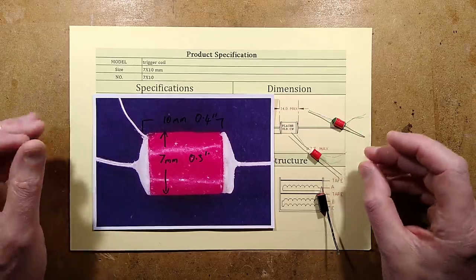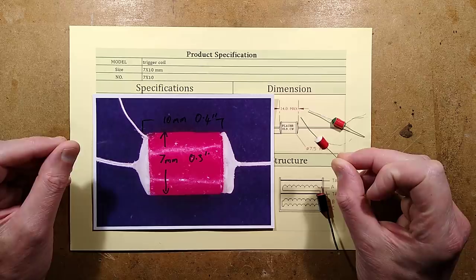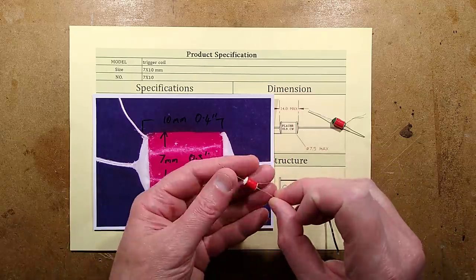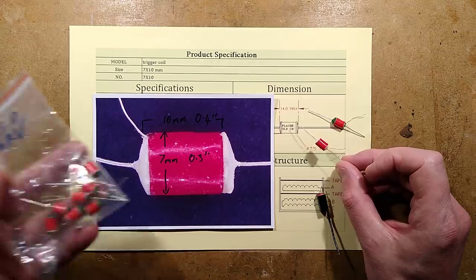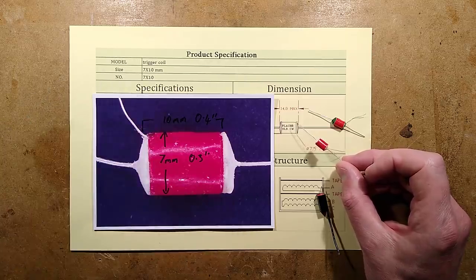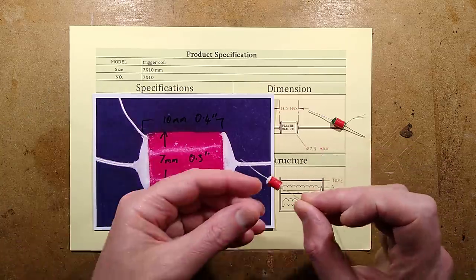Let's take a look at a high voltage trigger transformer for a xenon strobe tube. The reason I got these transformers, I got a couple of packs of them, is because I wanted to experiment with using them for other high voltage purposes.